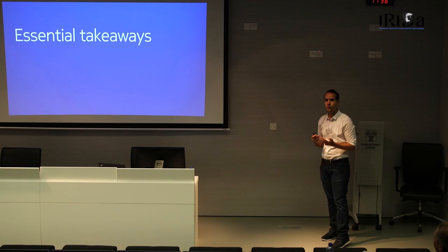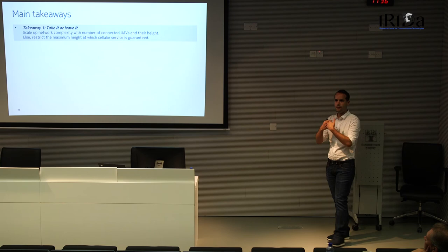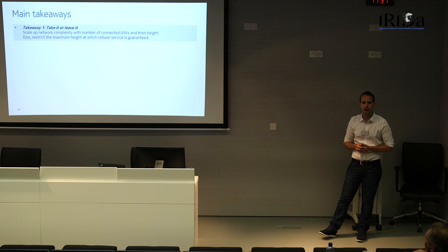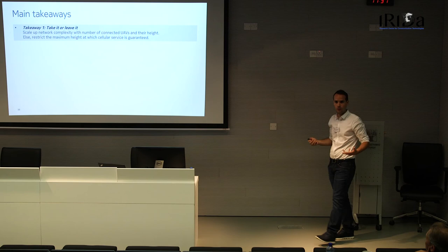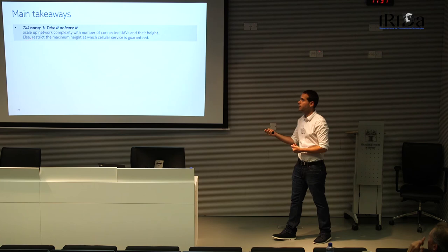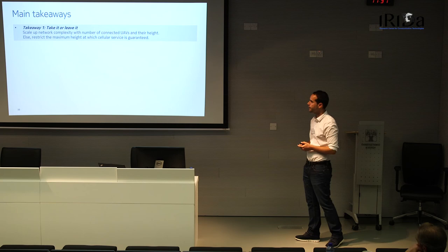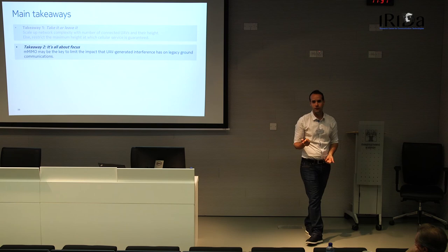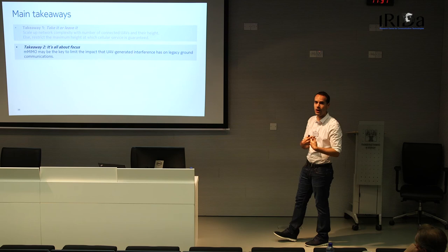Four key takeaways. First — 'Take it or leave it': if you want to serve more UAVs or UAVs at higher altitudes, you need to scale up network complexity to deal with increased interference, e.g., deploy massive MIMO. If operators don't want to do this, they must restrict the maximum height at which cellular services are provided. Second — 'Focus': our experiments show that massive MIMO is the key to limiting interference throughout, since line-of-sight channels are highly directional and massive MIMO handles this well.